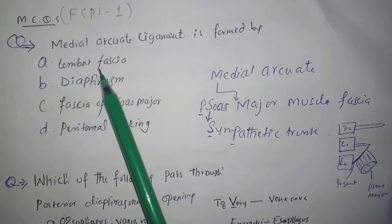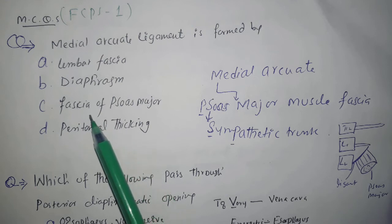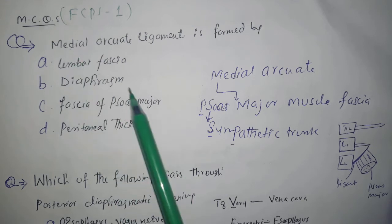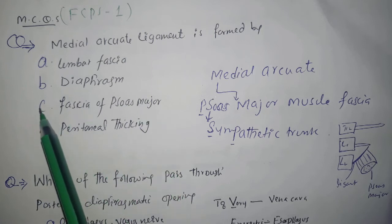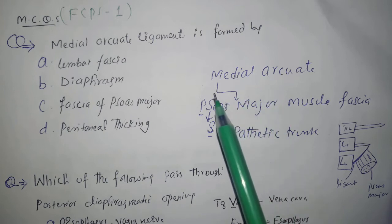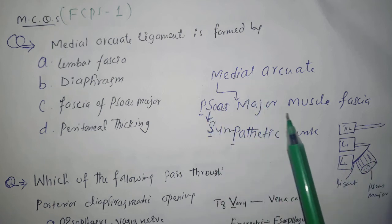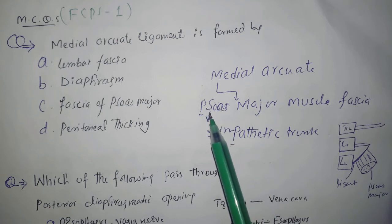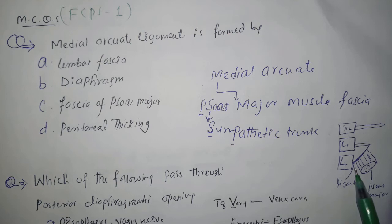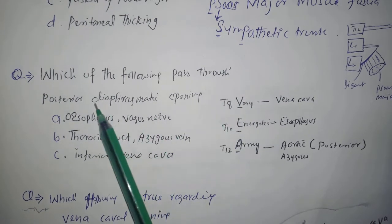The medial arcuate ligament is formed by the fascia of the psoas major muscle — remember M for medial arcuate ligament and S for psoas major, where S also stands for sympathetic trunk, which runs behind the medial arcuate ligament. This is a commonly tested MCQ point.